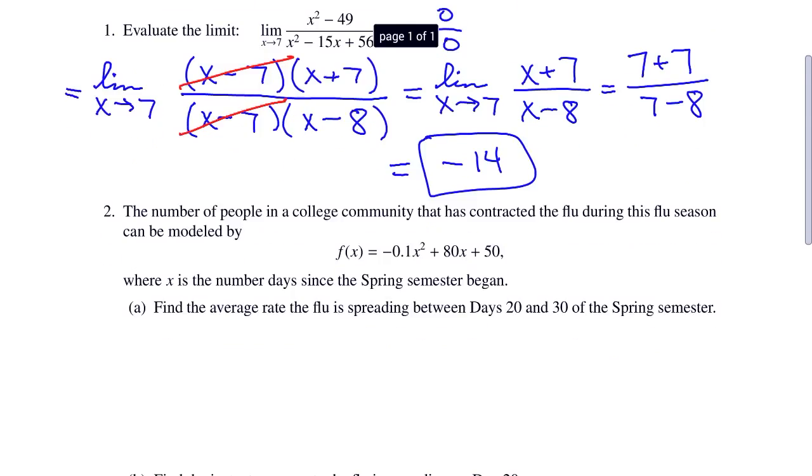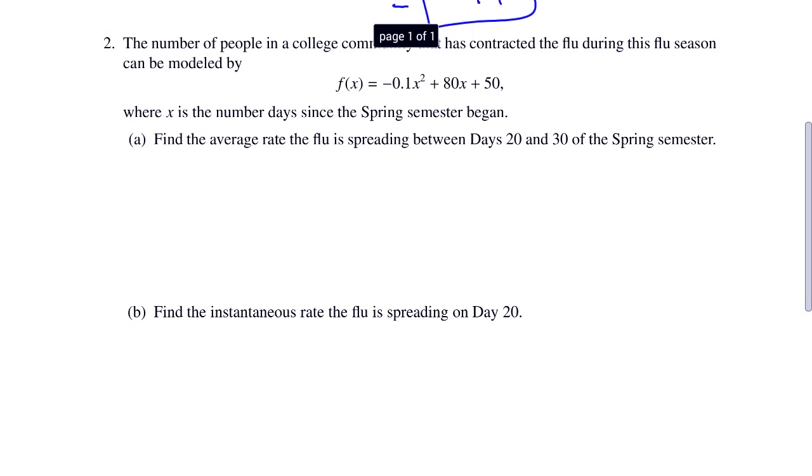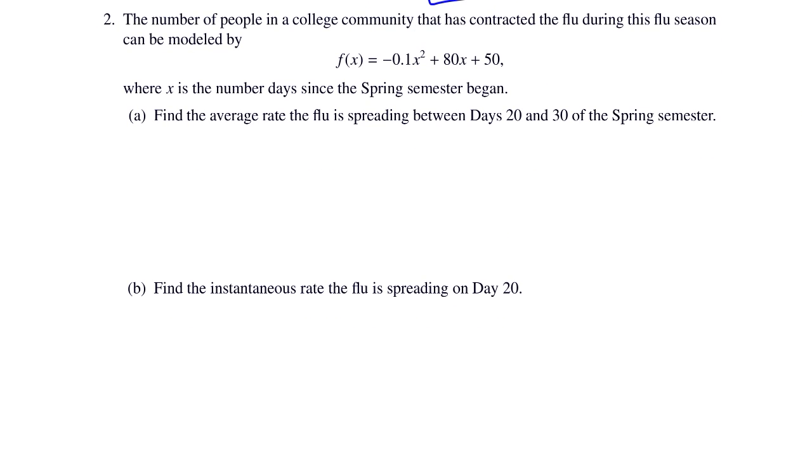In problem 2, we have the flu question. The model is f of x equals negative 0.1x squared plus 80x plus 50.